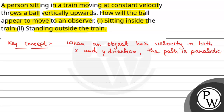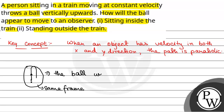Ab hum dekhenge first case mein — jab ek person ek ball ko upward throw karta hai. Agar person aur jo reference frame hai, matlab jo person dekh raha hai aur jisne ball throw ki, agar wo dono same frame mein hain — matlab dono train mein hain — is case mein the ball will appear to move vertically, because dono same velocity se move kar rahe hain, to ball vertically appear hogi.